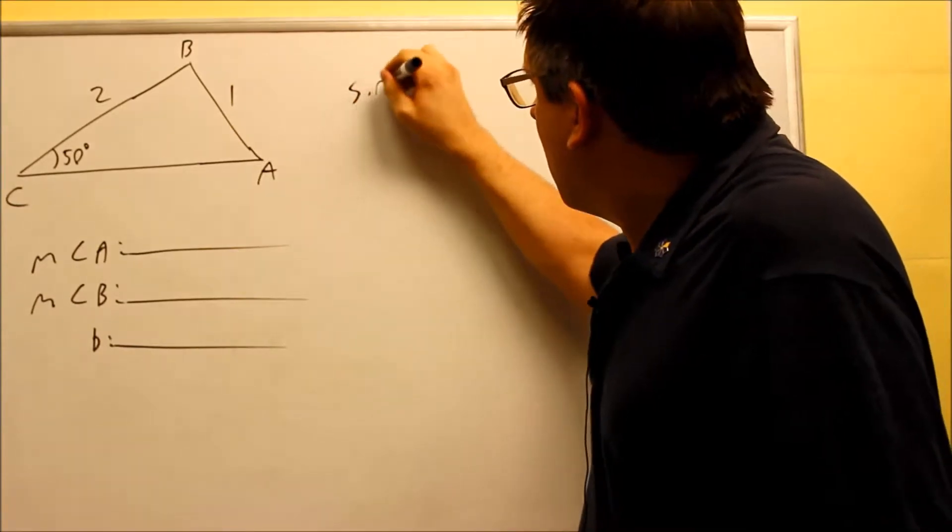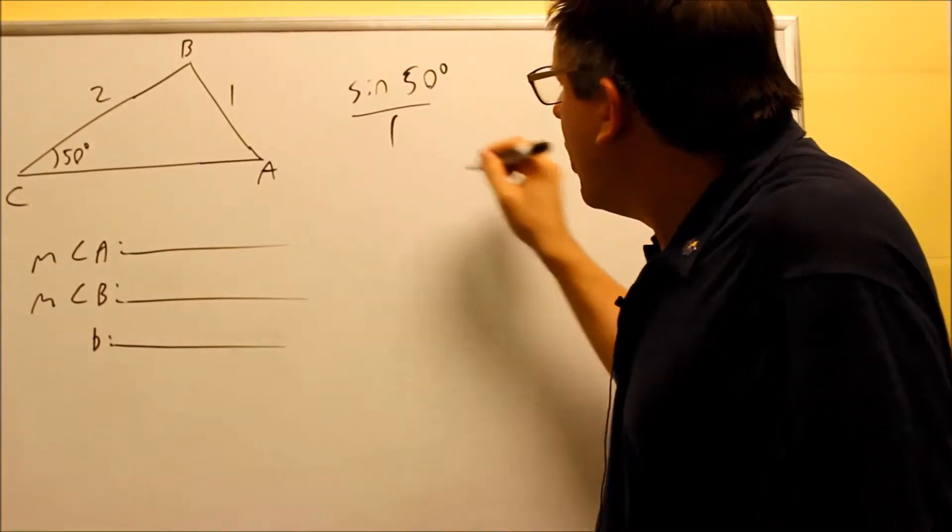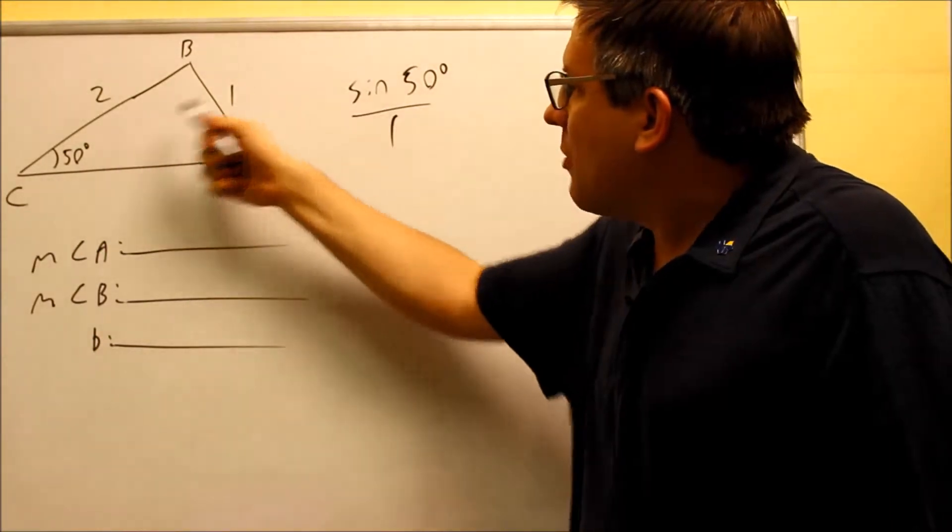Okay, let's start with our given ratio, sine of 50 degrees over 1, and that's the side opposite the given angle.